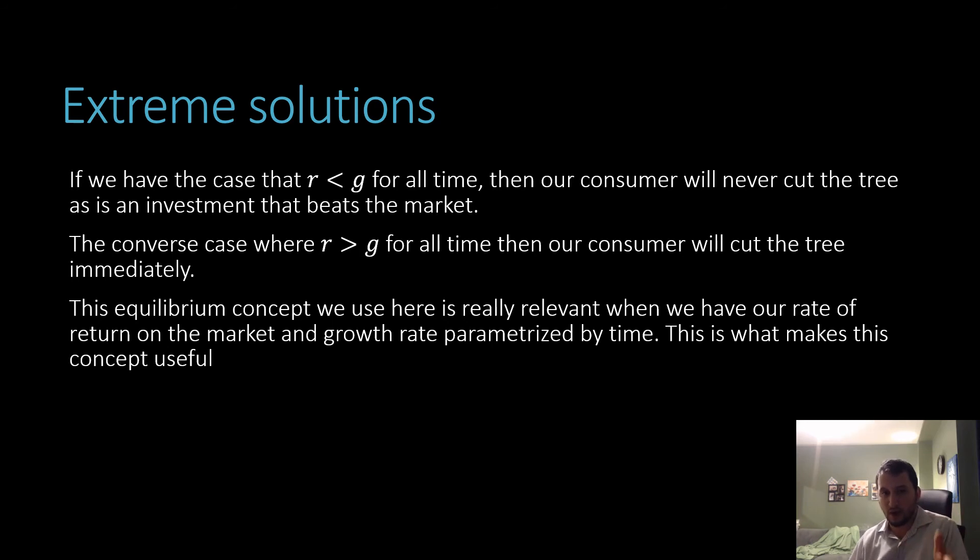Conversely, when we have a case where our discount rate, or really 1 over 1 plus r here, right, is greater than g for all time, then our consumer should cut down the tree immediately. That's at time zero. That tree is going to be picked up.